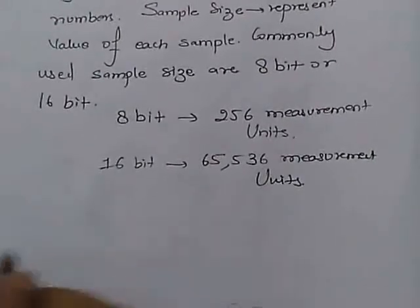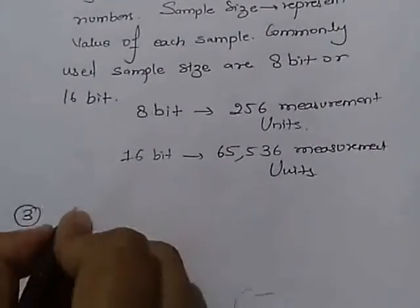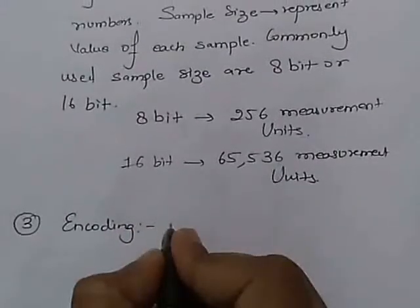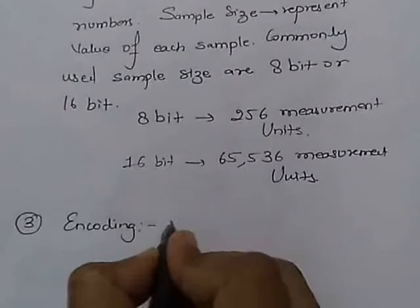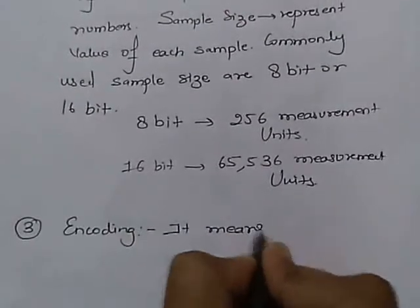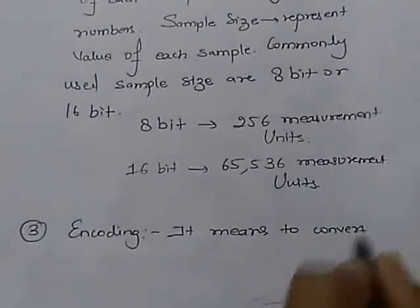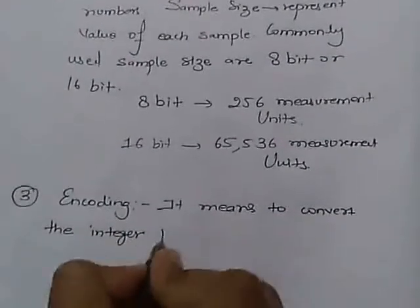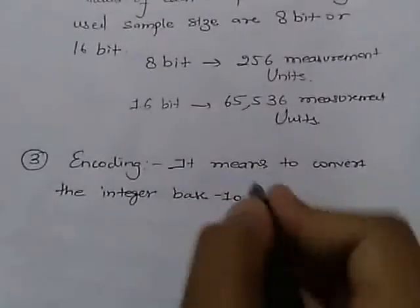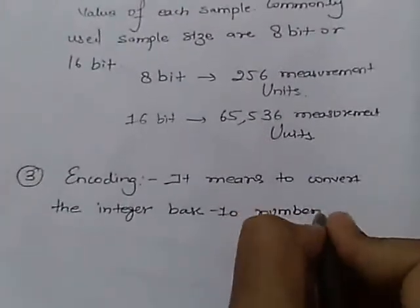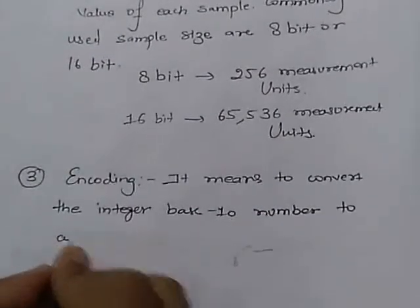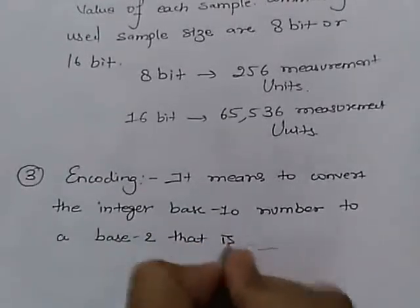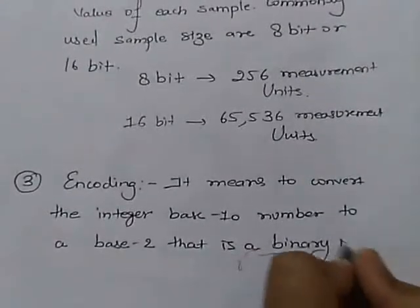The last step is encoding. Encoding means to convert the integer base 10 number to a base 2, that is a binary number.